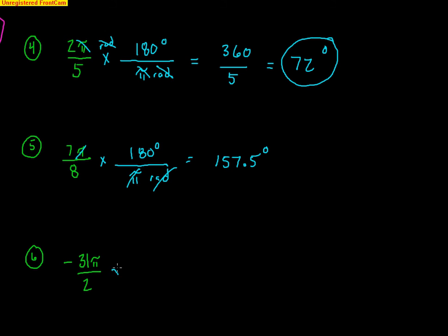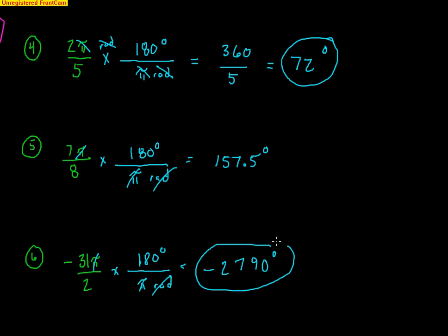One last conversion — for negative 31π over 2: put π radians on the bottom to cancel, 180 degrees on top. The radians cancel and the π cancels. I get negative 31 halves times 180. Using parentheses: negative 31 halves times 180 gives negative 2,790 degrees. 31 halves is well bigger than 1, so this is much bigger than one full circle.